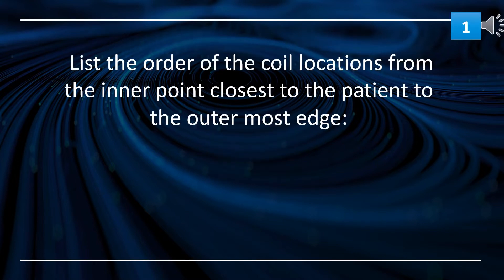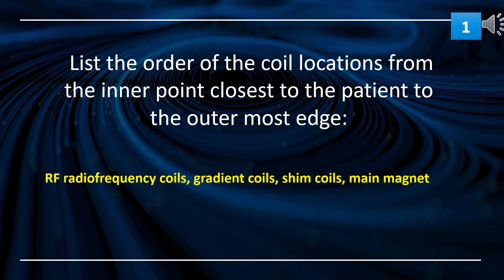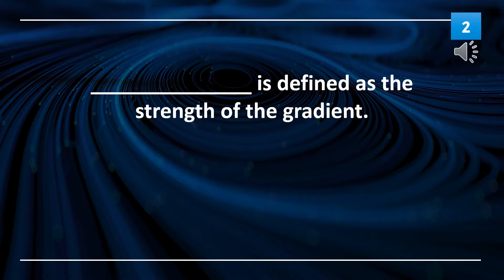List the order of the coil locations from the inner point closest to the patient to the outermost edge. The radio frequency coils are closest to the patient, then gradient coils, then shim coils, and furthest is the main magnet.